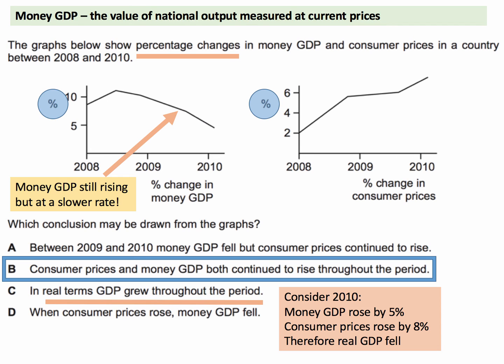Option D: when consumer prices rise, money GDP fell. Well, we've just identified that money GDP did not fall at all — it was always rising. What was happening was that the rate of growth of money GDP was falling. So the correct answer to this question is B.